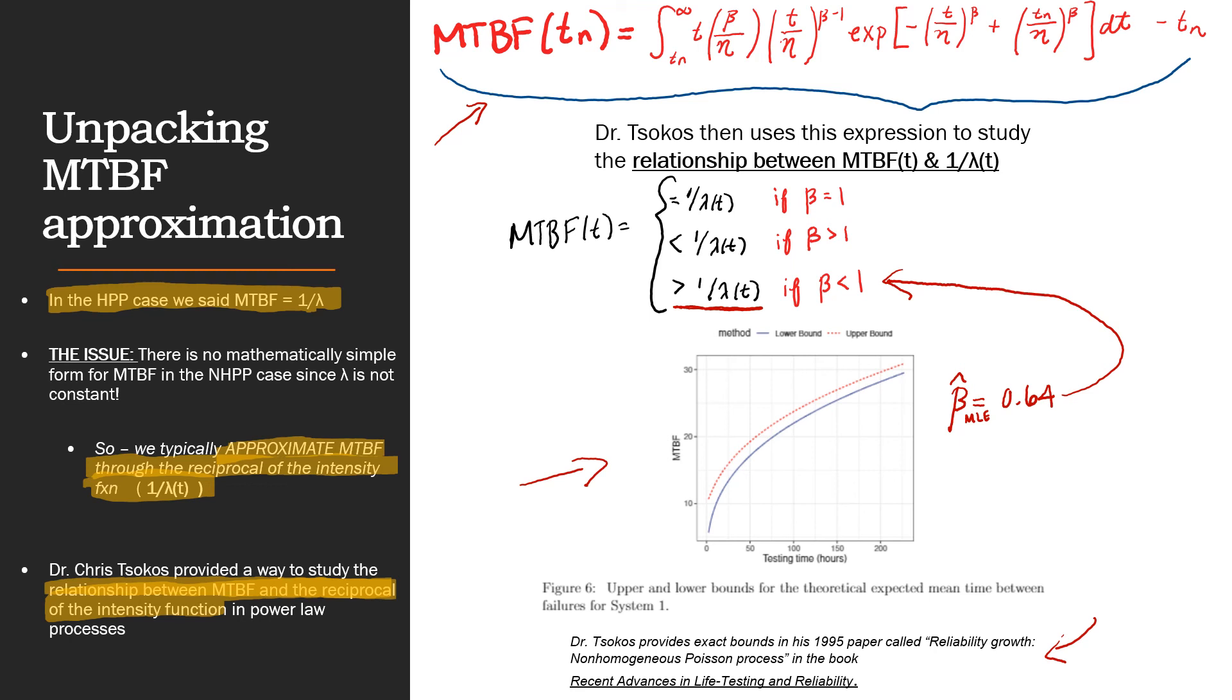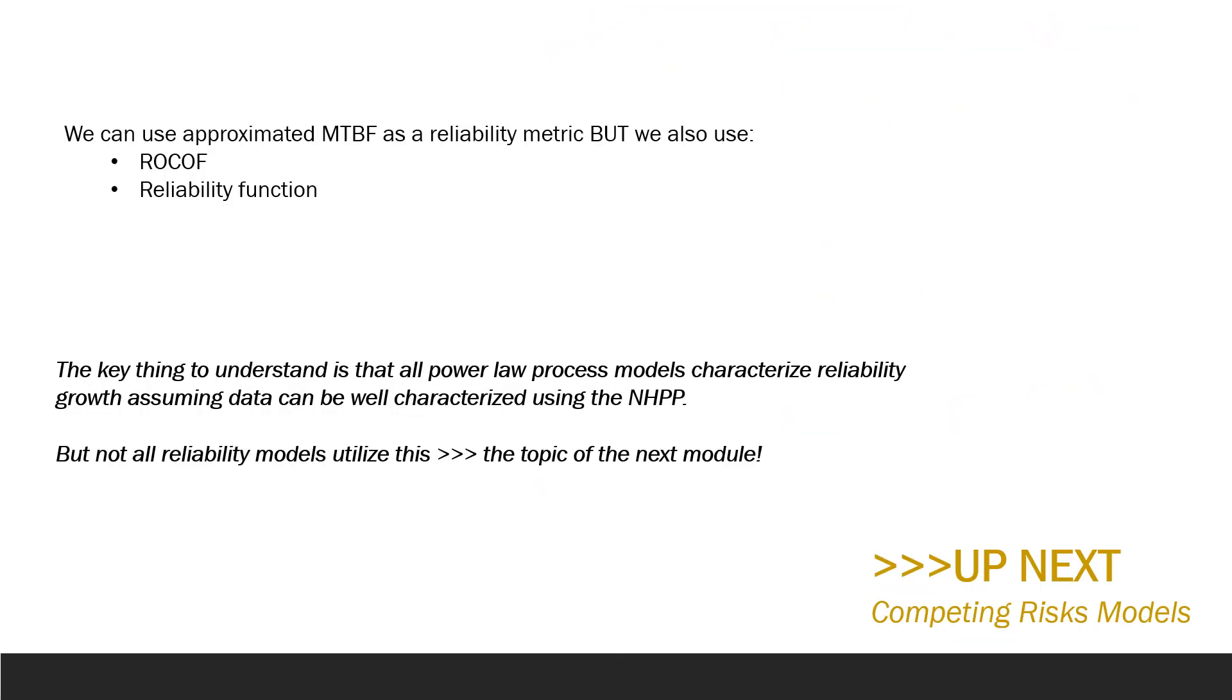So, in the lower bound, we have blue and the upper bound is in red. In this case, in this particular case, the lower bound is actually 1 over the intensity function, which we know is less than the true MTBF. So, while it is typical in DOD reliability growth to use 1 over the intensity function as an approximation of MTBF and utilizing it as the primary metric for reliability, there are other metrics like the reliability function and ROCOF, the intensity function.